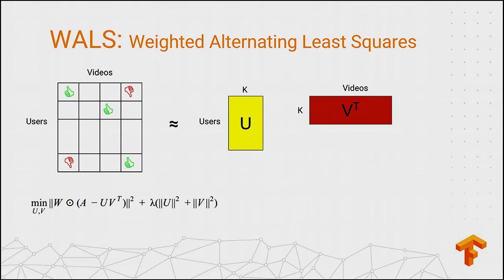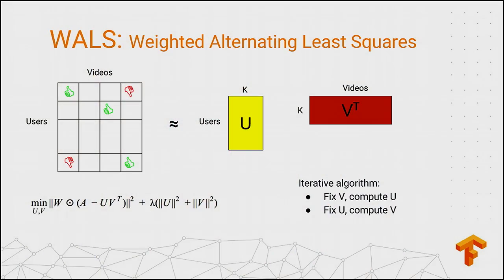This problem is highly non-convex. However, it turns out that if you fix one of the factors, there's a closed-form analytical solution for the other factor. So training works in an iterative way: you first fix V and compute U, then fix U and compute V, and iterate.